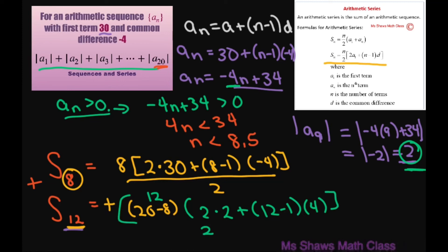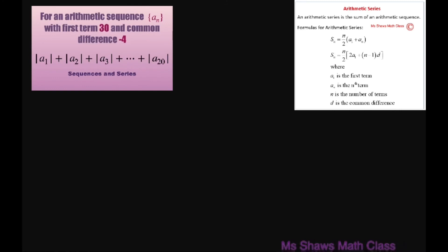When you simplify all of this, you get 8 times (30 - 14) plus 12 times (2 + 22), and this all equals 416. So that's the sum of our sequence.